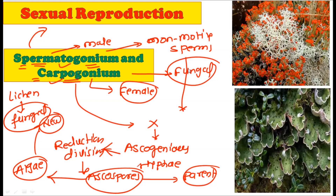An important point to remember is that in lichens, sexual reproduction is brought about only by the fungal partner. No algal partner is involved. Both organs — spermatogonium and carpogonium — belong to the fungal partner only. The ascospores are typically a fungal structure; when they come in contact with algae, they form the new thallus and hence the lichen, which is the combination of algae and fungi.